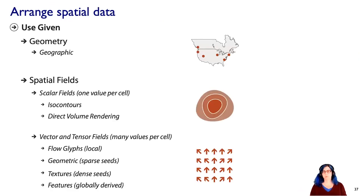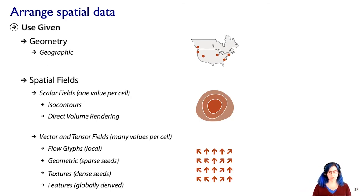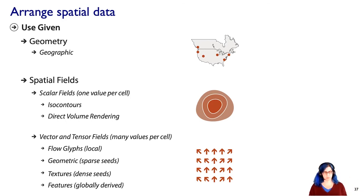That concludes the discussion about using given spatial data as the way to arrange the spatial layout of a visualization. In the previous segment we talked about geographic and cartographic data sets, and in this one we were focused on spatial fields — both scalar and vector and tensor.